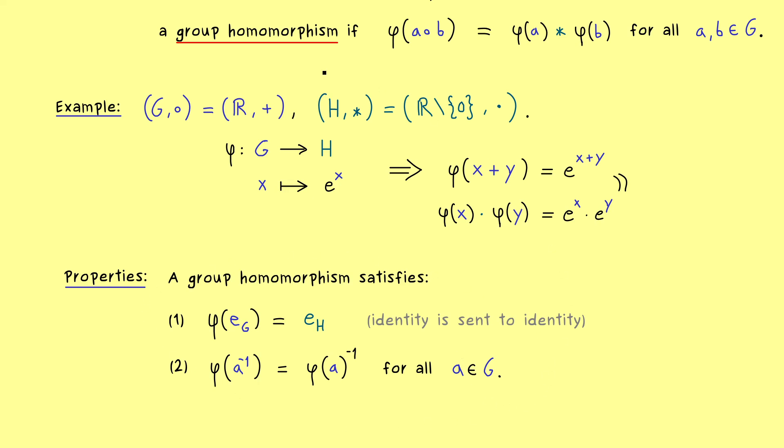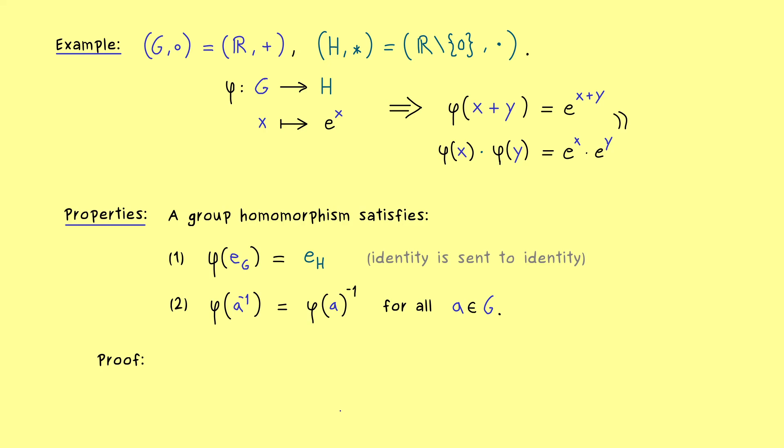However, that is not needed, because we can simply prove them here. So let's start with the first one, by using the properties of the identity element. This means, if we use e_G in the binary operation, we don't change anything. Therefore, instead of e_G, we can also write e_G with e_G. And then we can use the property of the group homomorphism. So now our calculation is in H, and there the binary operation is denoted by a star.